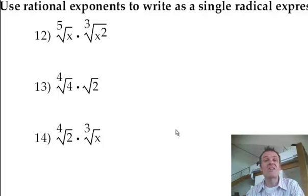Use rational exponents to write as a single radical. So what we're saying here is that we're going to do some multiplications, we're going to combine these things, but we can't really combine a fifth root and a cube root, like in question 12. But we can if we change it to rational exponents, in other words, deal with fractions.